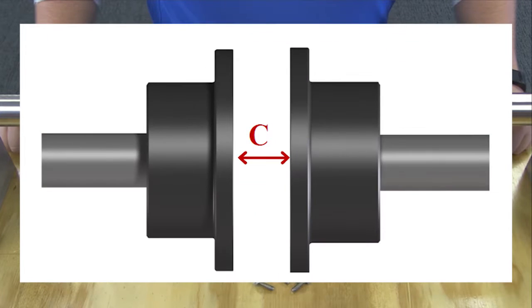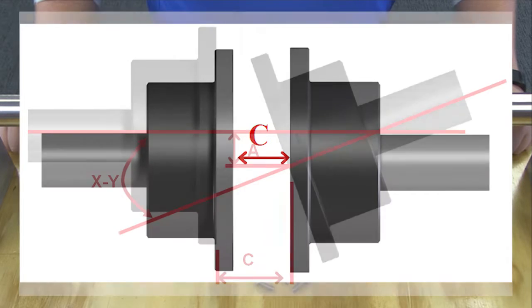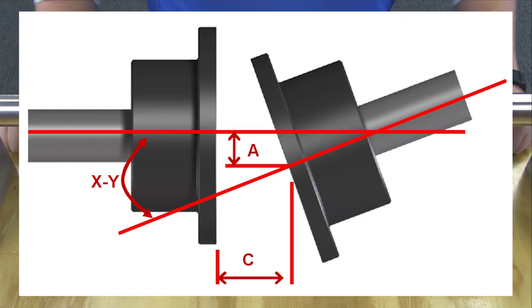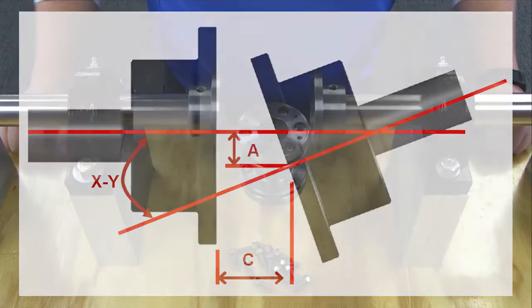For axial misalignment, measure the distance between the shafts and account for thermal growth. Misalignment in general is undesirable, as it can cause damage to the connected equipment and shorten the life of the coupling itself.